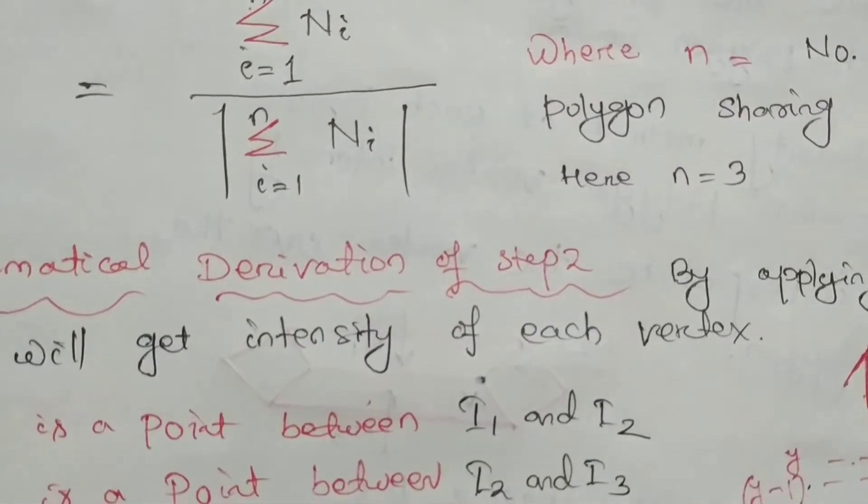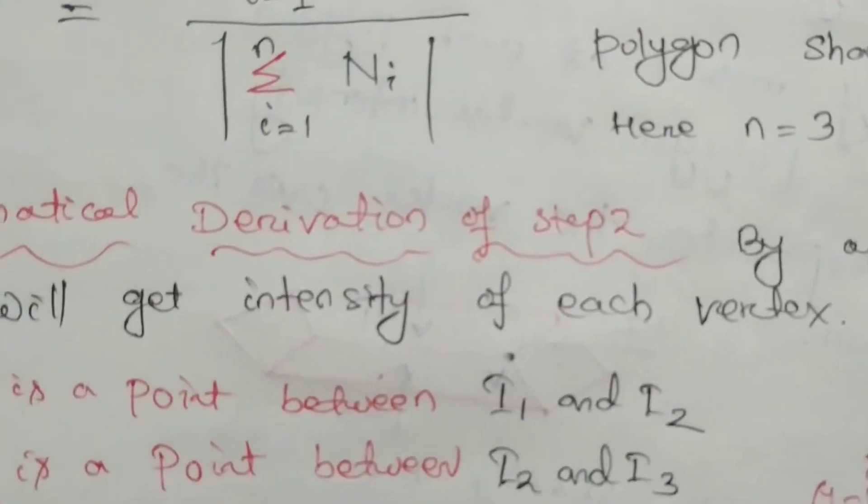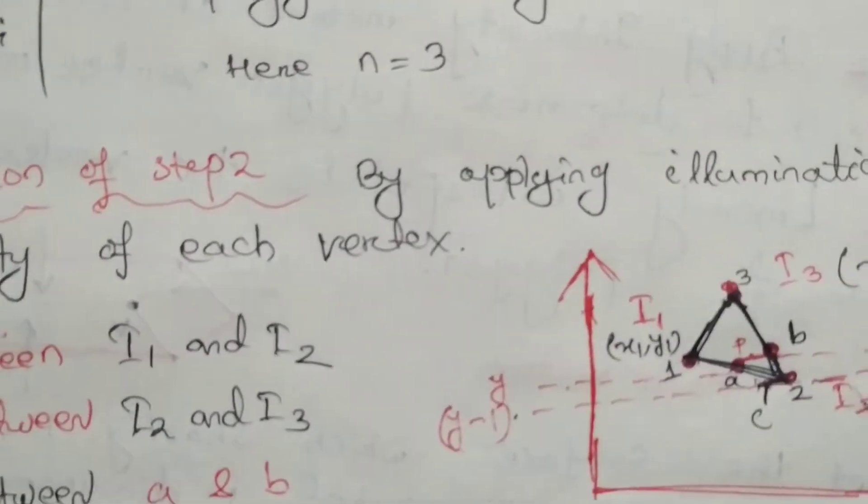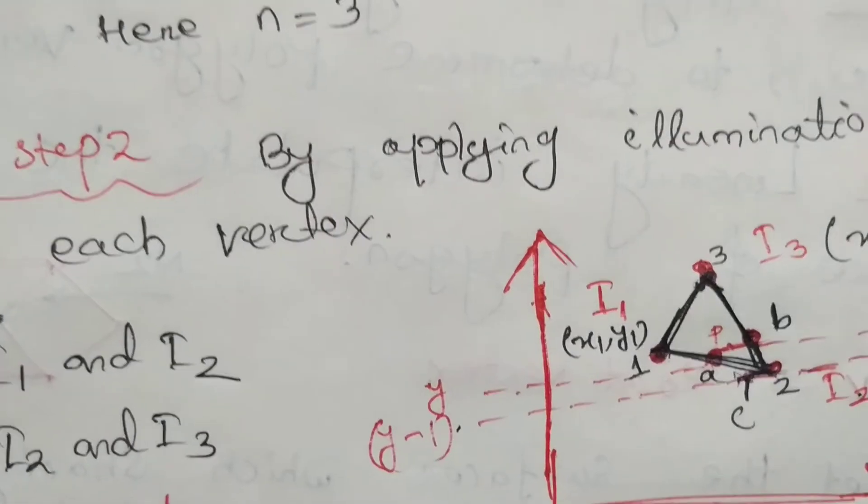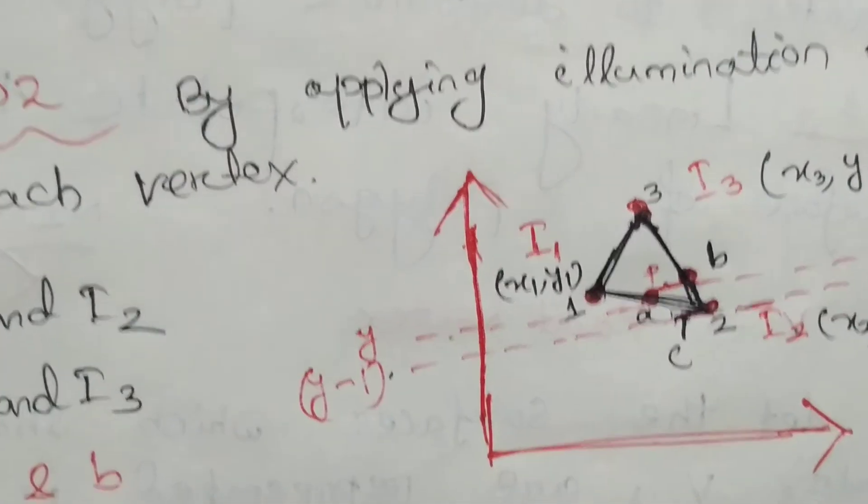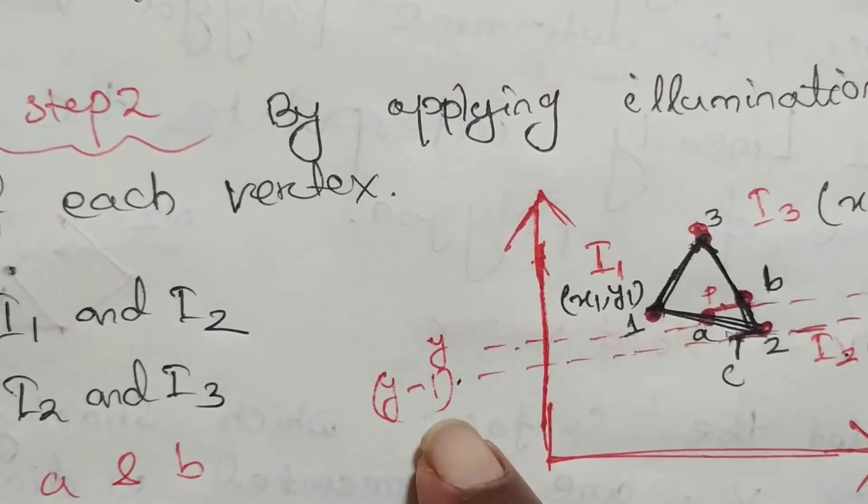Then mathematical derivation of step 2. By applying the illumination model, we will get the intensity of each vertex. Suppose here you see this is a polygon. And here suppose this is Y axis. Then the next point below in this Y axis is Y minus 1.